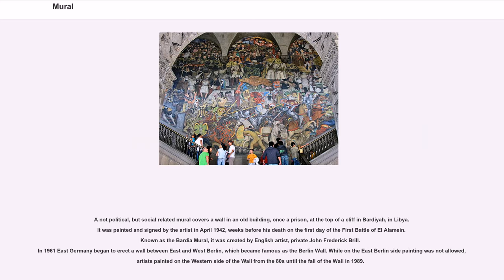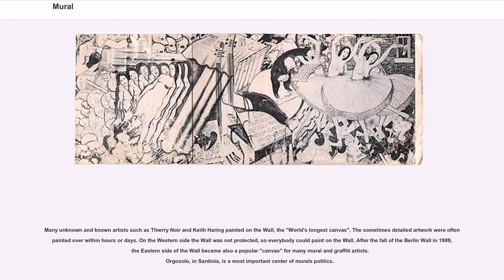A social-related mural covers a wall in an old building, once a prison, at the top of a cliff in Bardia, Libya. It was painted and signed by the artist in April 1942, weeks before his death on the first day of the First Battle of El Alamein. Known as the Bardia Mural, it was created by English artist Private John Frederick Brill. In 1961, East Germany began to erect a wall between East and West Berlin, which became famous as the Berlin Wall. While on the East Berlin side painting was not allowed, artists painted on the Western side of the wall from the 1980s until the fall of the wall in 1989. Many unknown and known artists such as Thierry Noir and Keith Haring painted on the wall — the world's longest canvas.